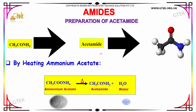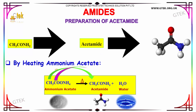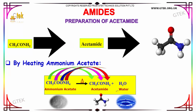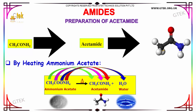Preparation of Acetamide: Acetamides are prepared by heating Ammonium Acetate. It produces water also as a byproduct. This is a three-dimensional structure of Acetamide.